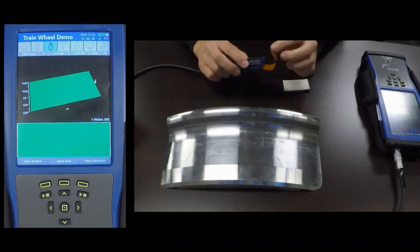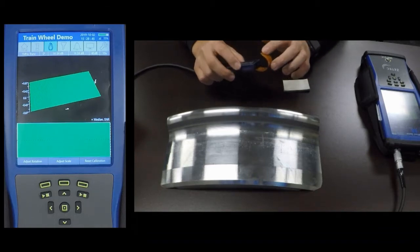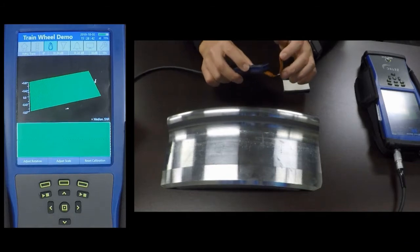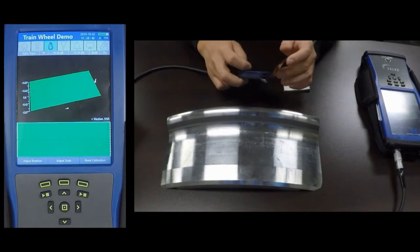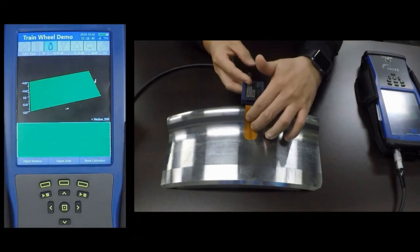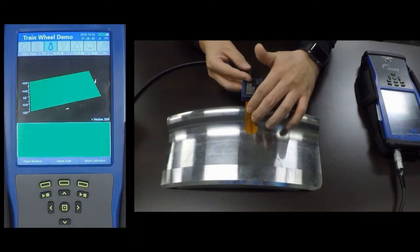This is a thin film probe. The benefits of using this type of probe is, as you can see, it is very flexible, so it can conform to a variety of surface contours.